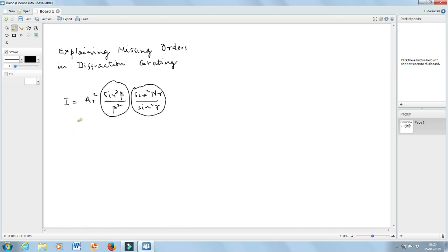You know that beta is equal to half kb sin theta and gamma is equal to half kd sin theta. Now, b is the width of each individual slit, and d is the distance between two adjacent slits.